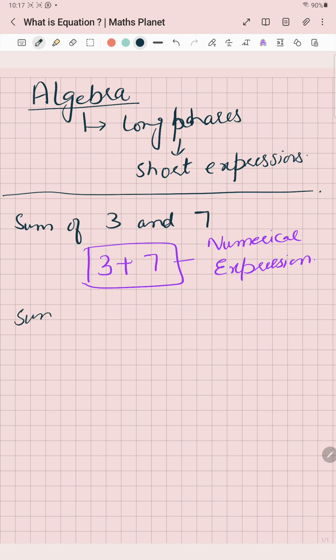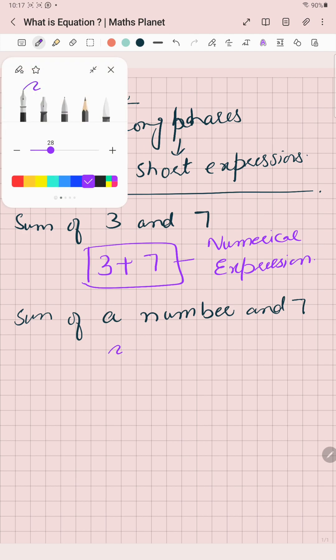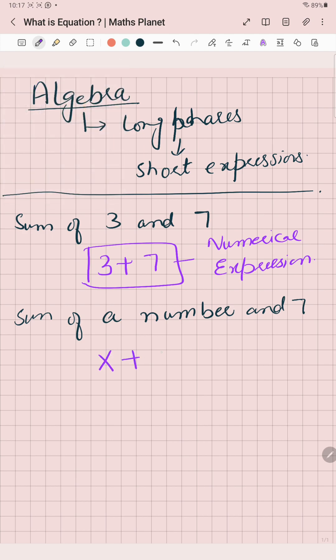Now, sum of a number - I'm not specific for any number, I'm writing sum of any number and 7. So I don't know which is the number, so I will write x plus 7. This includes a variable, so this is known as an algebraic expression.